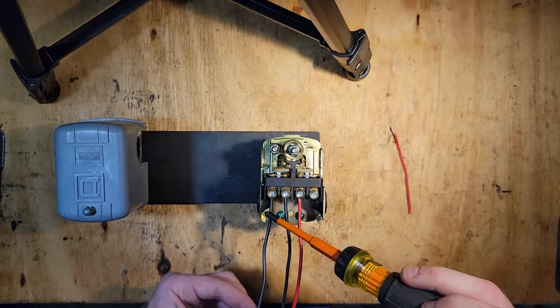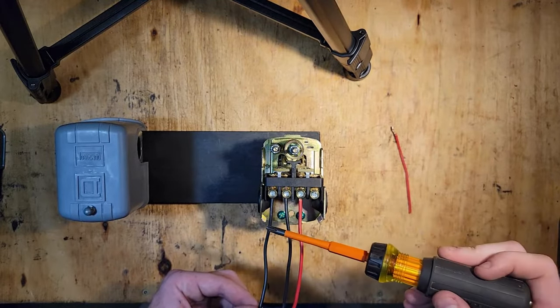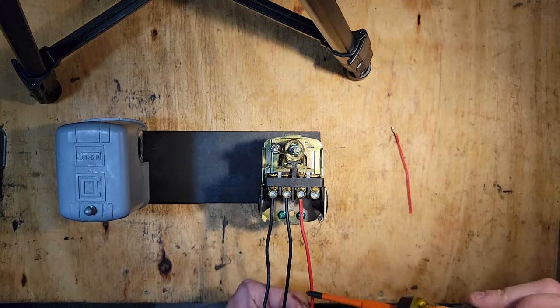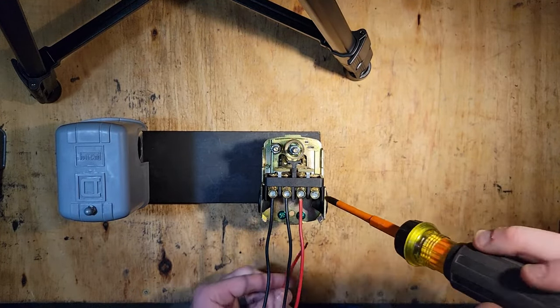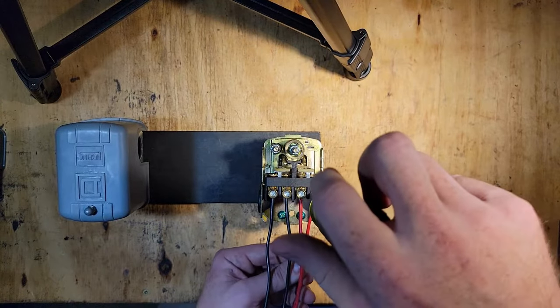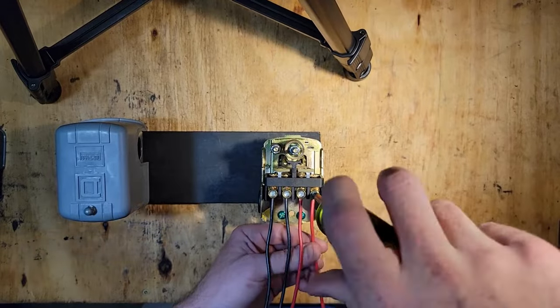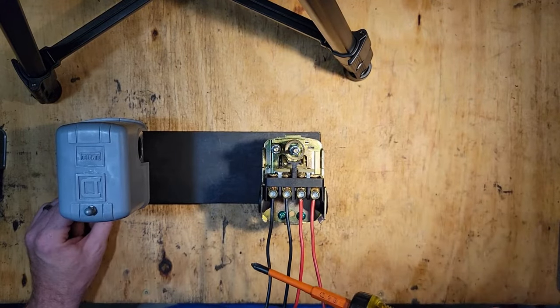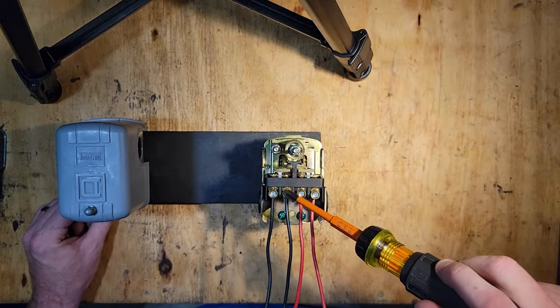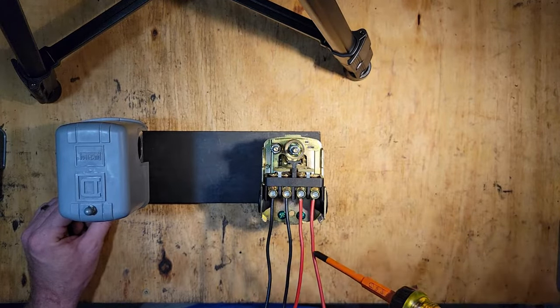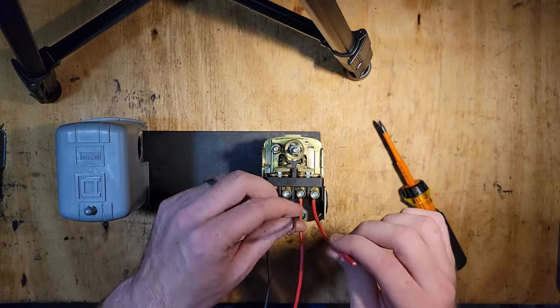In this situation, I'm going to have a hot from my breaker. Speaking of 240 volt, I have a hot coming on one side and then another hot coming in on the opposite side. Then the adjacent one to each will be what goes to your control box. So we'll have power coming in from a breaker, power going out to the control box, power coming in from the breaker, power going out to the control box.